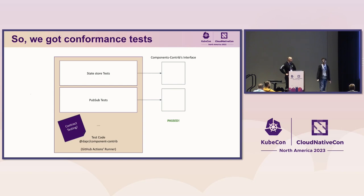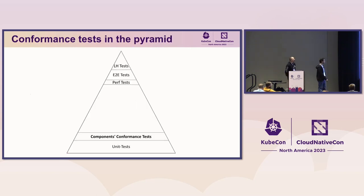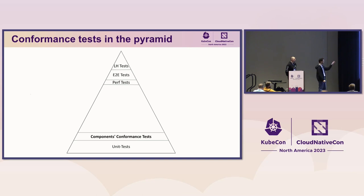We have a framework written that basically mimics DAPR — it's not actually DAPR calling into these interfaces because these are individual implementations. We make sure we test them, and these conformance tests are really quick. A whole suite of 150 tests finishes in under 15 minutes. Component conformance tests are placed above unit tests because they are still in code — they're not running in an actual compute environment. They're testing more things than just individual functions; they're testing a component as a whole. But they're not running inside compute environments like Kubernetes, so they're still in the lower part of the pyramid.